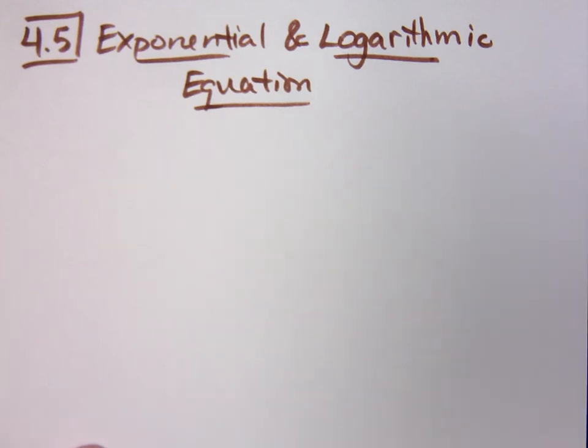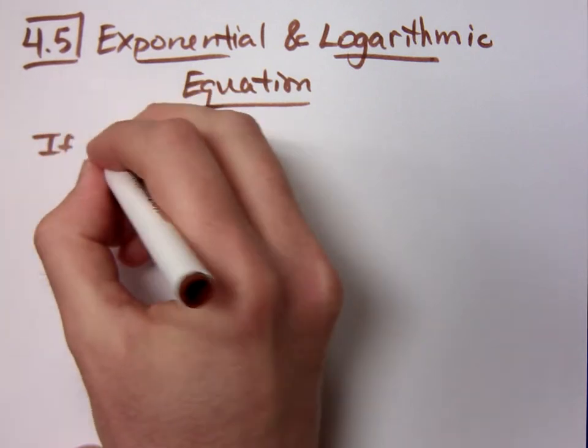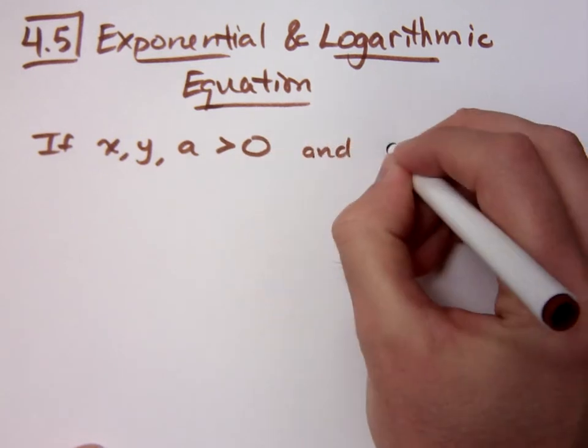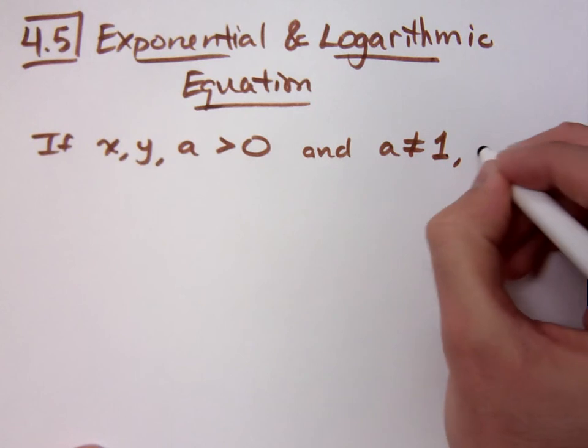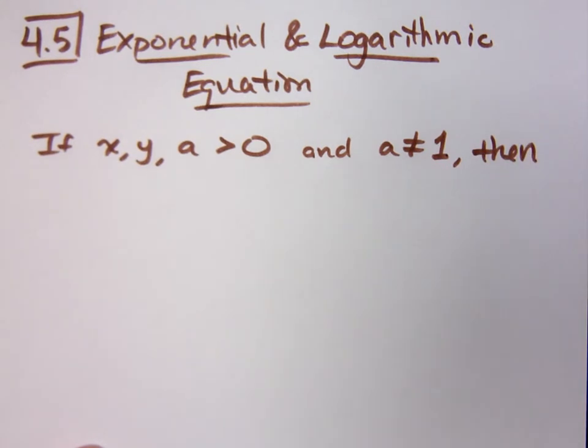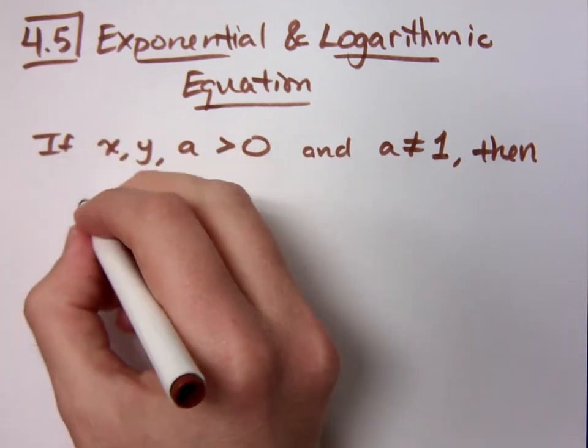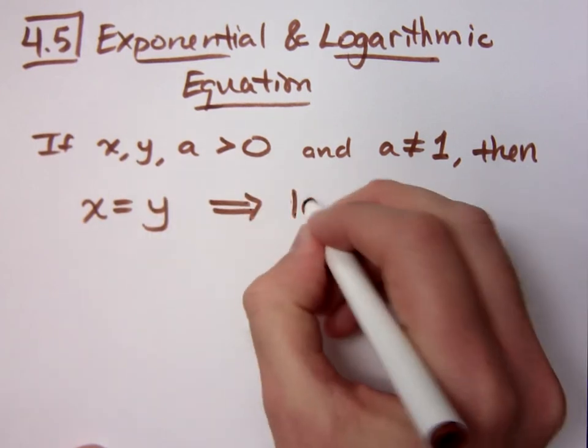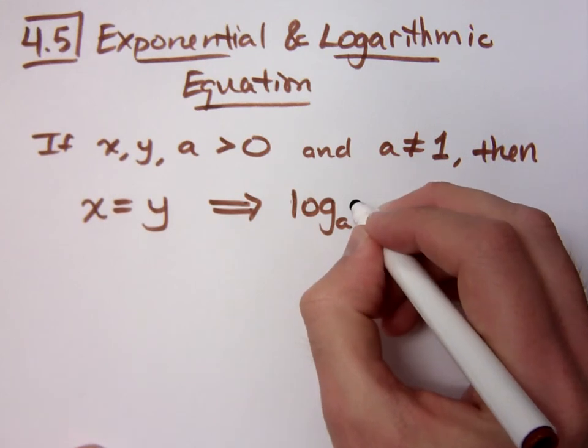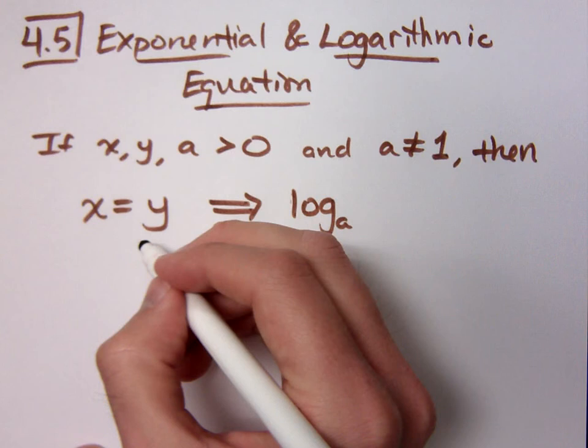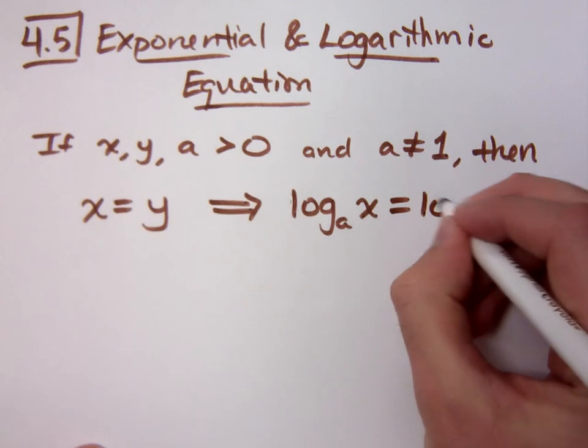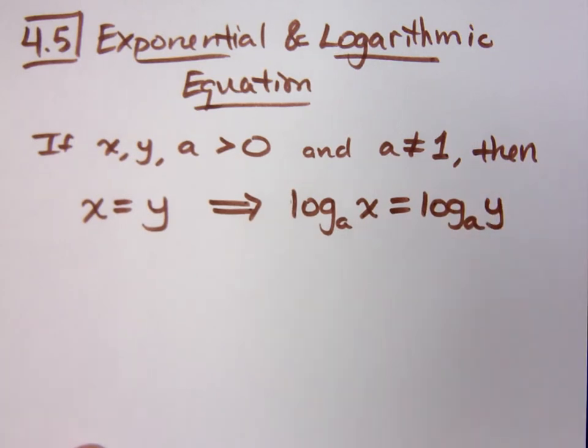Now, here's one of the coolest things that we have. If x, y, and a are positive, and a does not equal 1, then here's what we can do. So all the variables I'm talking about have to be positive, and that a cannot equal 1. Then, x equals y means that you can do log with a base a of x is equal to log with a base a of y.